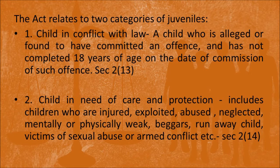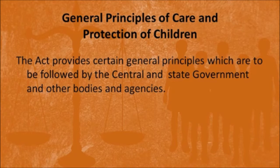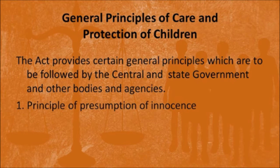The act provides 16 fundamental principles which are to be followed by the agencies while implementing this act. The first principle is the principle of presumption of innocence. According to this principle, every child has to be presumed innocent of any criminal intent or malefic intent up to the age of 18 years. This means every juvenile below 18 years will be considered to have no malefic or criminal intent — that means no mens rea.